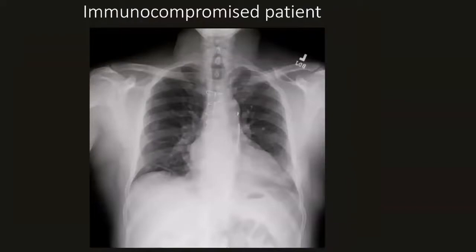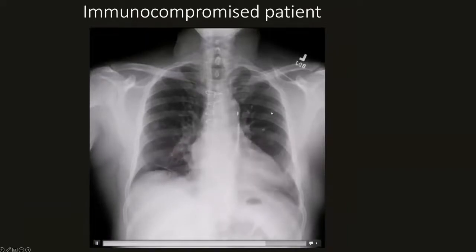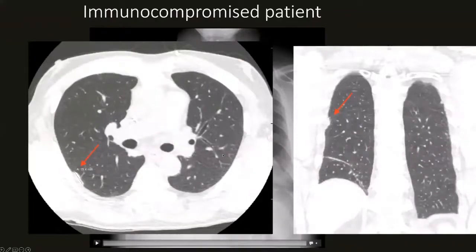A more clinically interesting case involved a post-cardiac transplant patient who had a nodular opacity on a routine chest x-ray. On DDR, the nodular opacity was confirmed to move up and down with lung parenchyma, confirming it was within the right lung. A similar nodular opacity was also seen on the left side. Subsequent chest CT identified the nodular opacities, and biopsy confirmed the patient had cryptococcus.